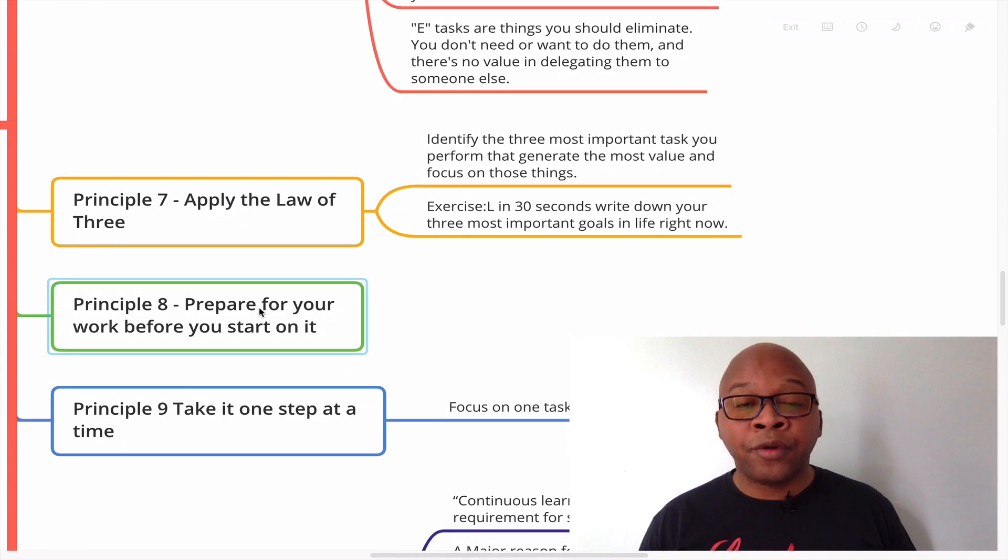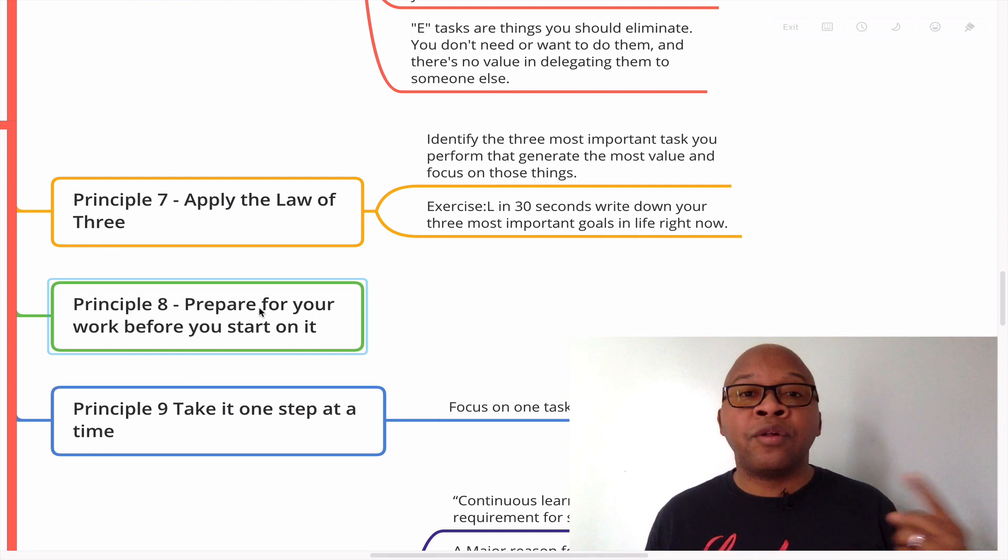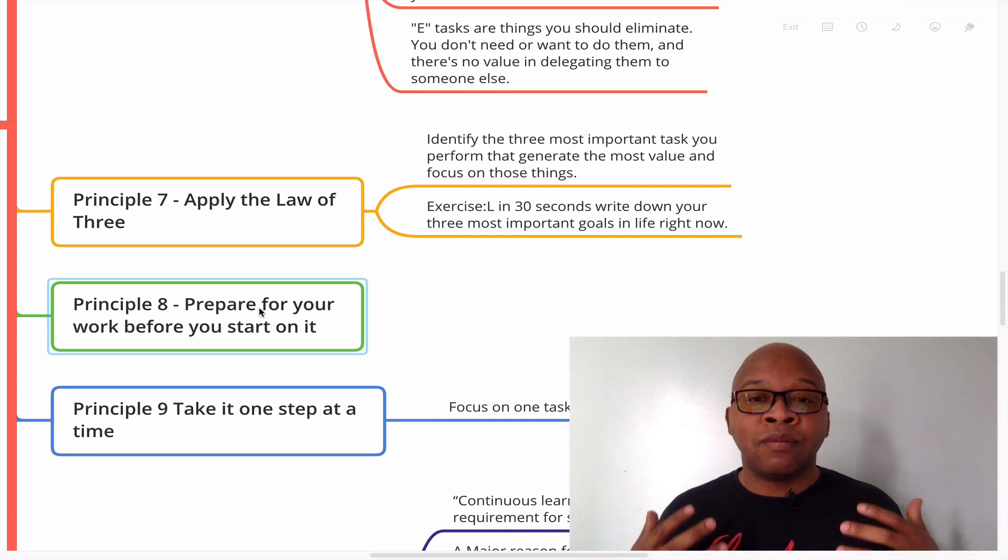Principle number seven, apply the law of three. Identify the three most important tasks you perform that generate the most value and focus on those tasks. So think about the three most important tasks that you perform every single day. Think about what they are and then focus on those three tasks. Now, in the book, Brian shares an exercise. He said, in 30 seconds, write down your three most important goals in life right now. Typically, most people will have a health goal, a relationship goal, a finance goal. So those are the three areas that most people will have as their top three goals. So then if those are your top three areas, you want to make sure that you're working on those most important tasks, the things that really matter to you every single day.